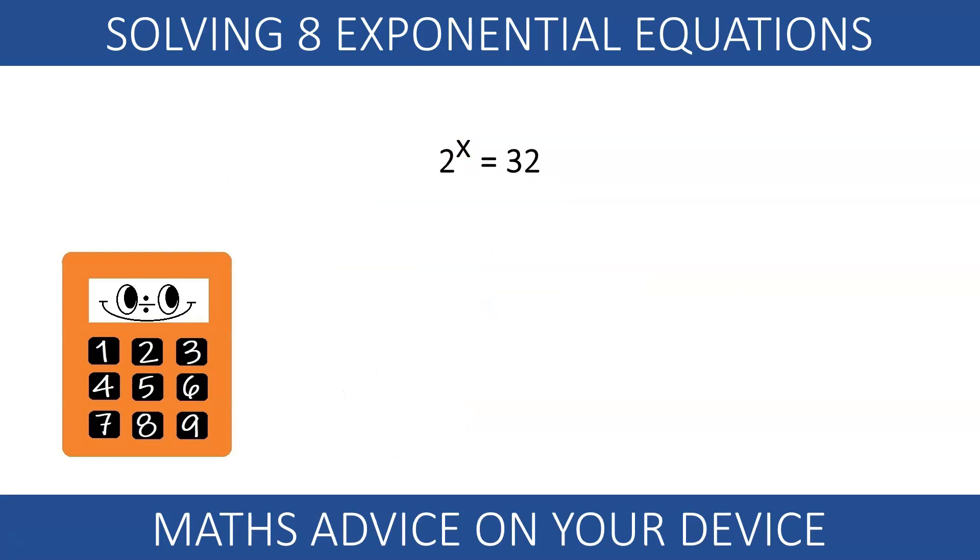Ready? We are lucky that 32 is a power of 2. 2 to the power of 5 equals 32. So x must be 5.